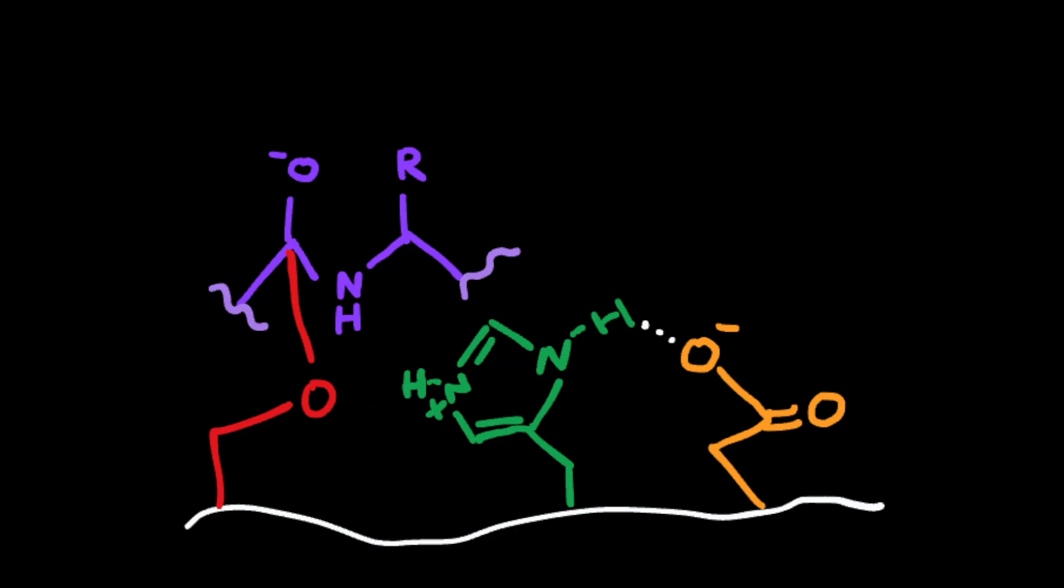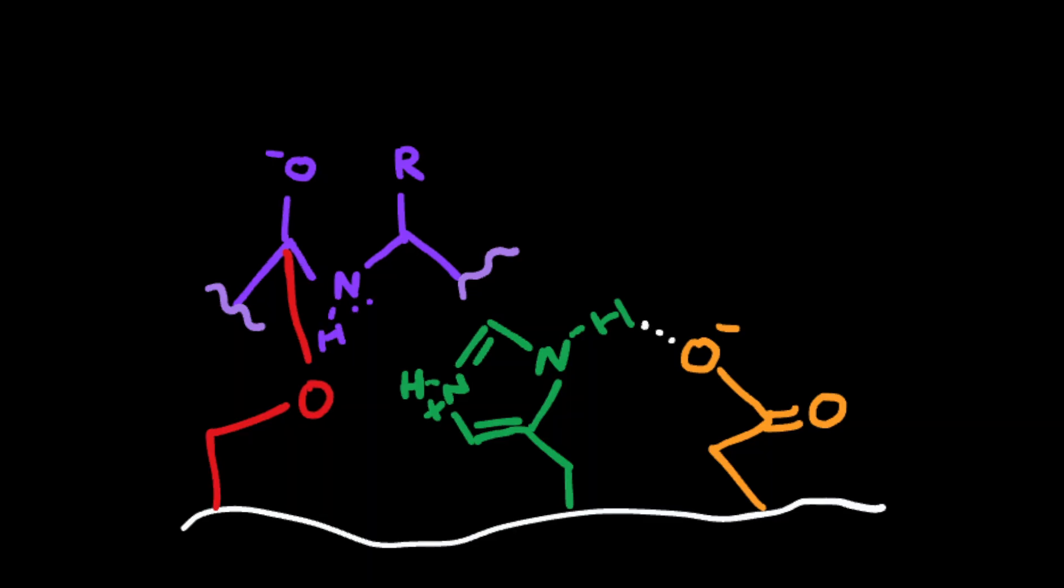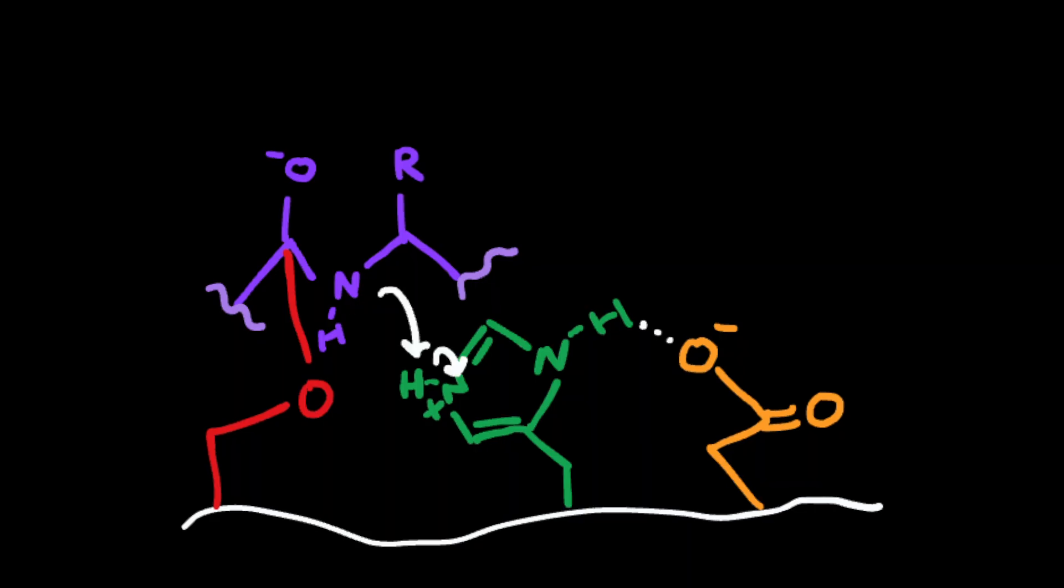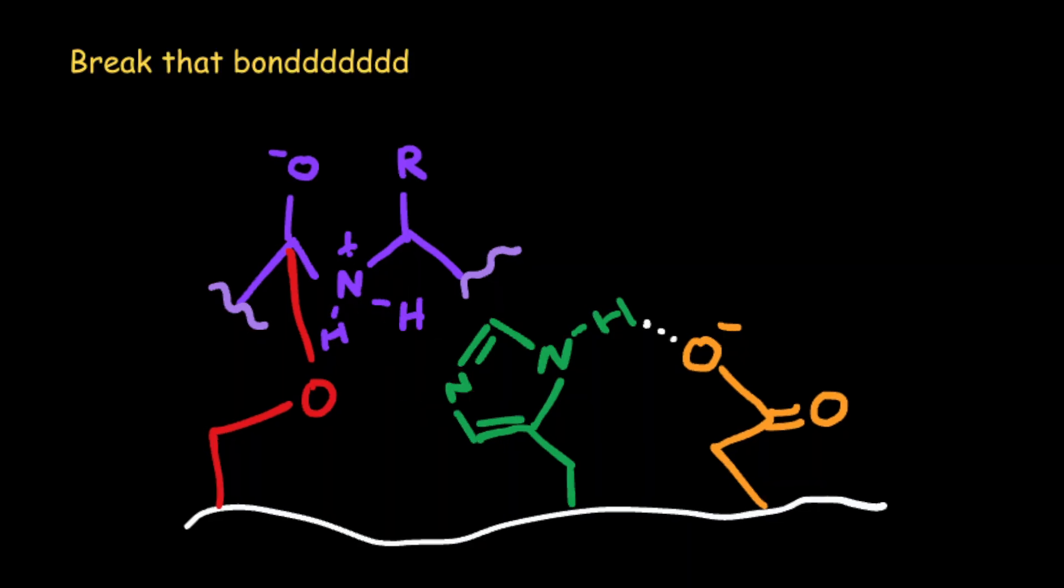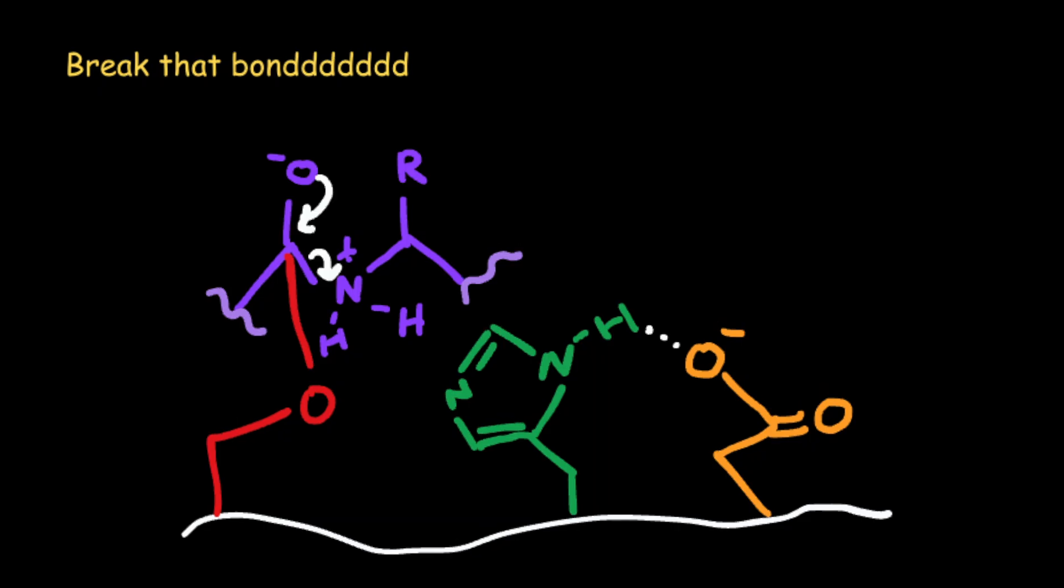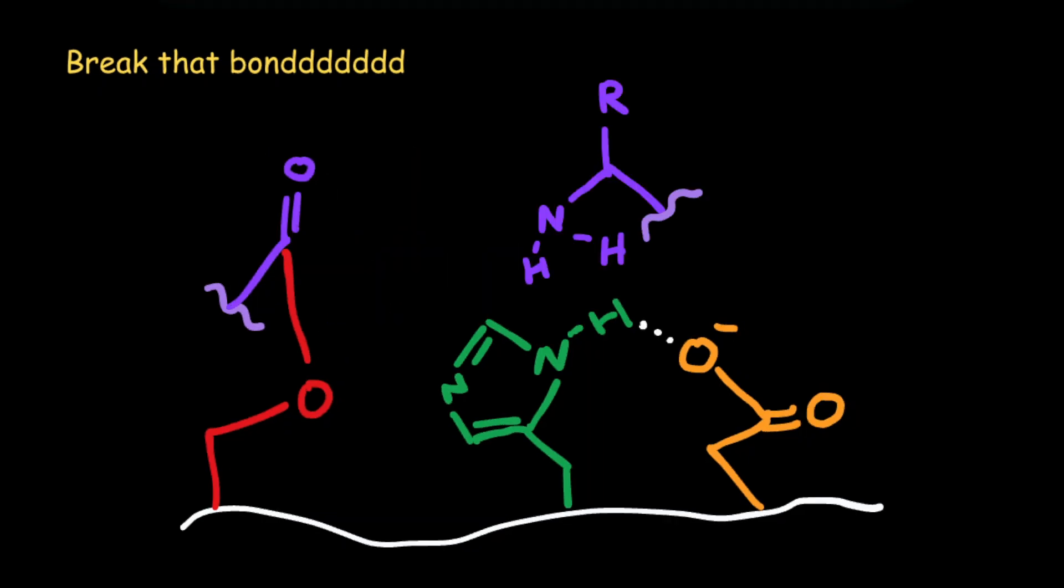Now to get out of this kind of wonky intermediate, the nitrogen is going to take the proton from histidine. Now that nitrogen is a really good leaving group, so we can actually break the bond we've wanted to break this whole time, and we have two separate amino acid halves.